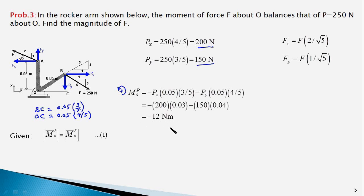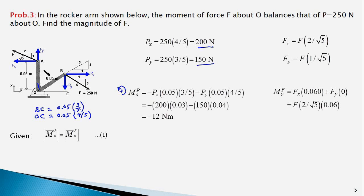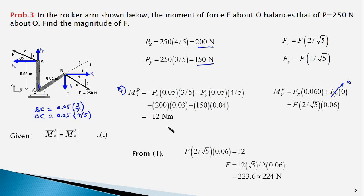Now we find the moment of force F about O. We notice that Fy passes through point O, so its moment about O is zero. The horizontal component Fx causes an anticlockwise moment, with a moment arm of 0.06 meters. Therefore, the moment of force F about O is Fx × 0.06 = F × (2/√5) × 0.06. Since the magnitudes of the two moments are equal, we equate this to 12 newton-meters and solve, giving F = 224 newtons. That is our answer.